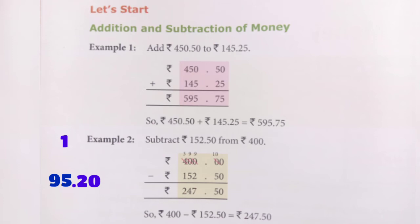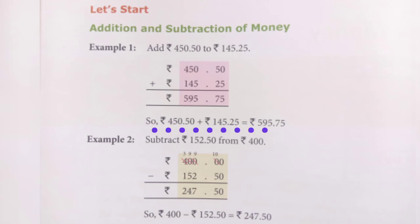Next page: addition and subtraction of money. We will learn how to add or subtract money. Example 1: Add 4450 rupees to 100 rupees 45 paisa and 25 paisa. To add them, first write them properly in columns - rupees in the rupees column and paisa after the decimal point. We add paisa first: 0 plus 5 is 5, 5 plus 2 is 7, so 75 paisa.